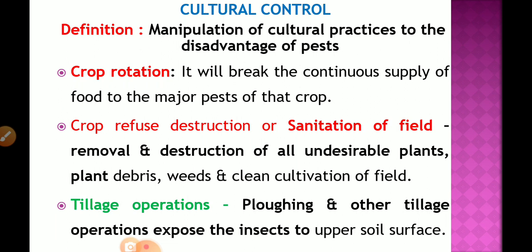For example, growing okra followed by cotton increases pest attack. Instead, we should alternate with cereals or pulses. For instance, cotton one year then soybean the next, or in the case of sugarcane, follow with maize or other vegetables. This breaks the food supply and minimizes the pest population — that is crop rotation.